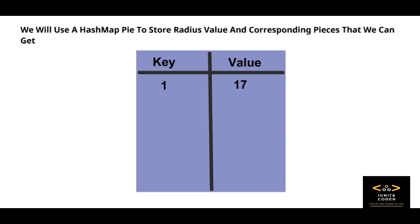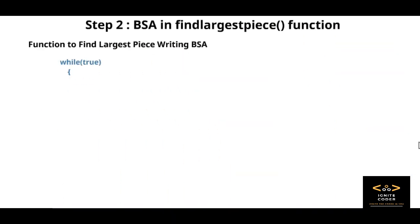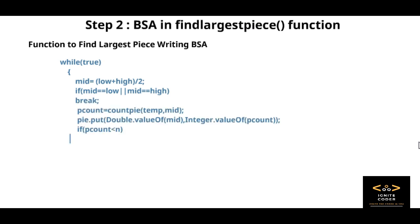Now let's implement the binary search algorithm. In first step, all we do is find the mid value and then we pass it to the count pi. After that, we will store the corresponding mid value and count value in our hash map.